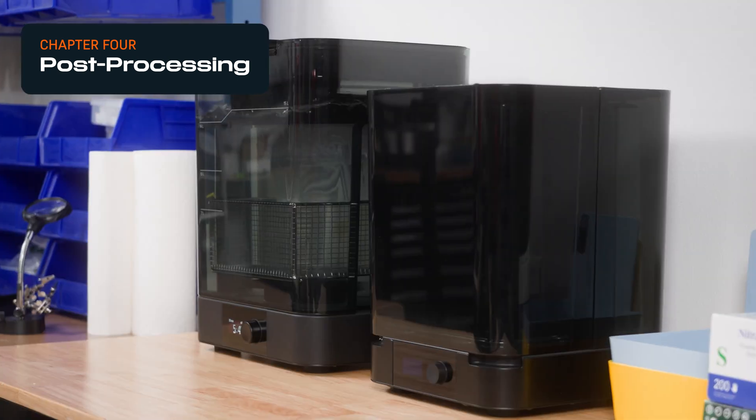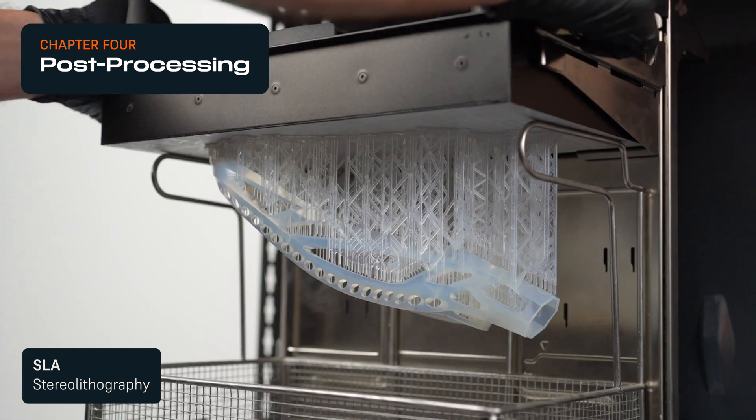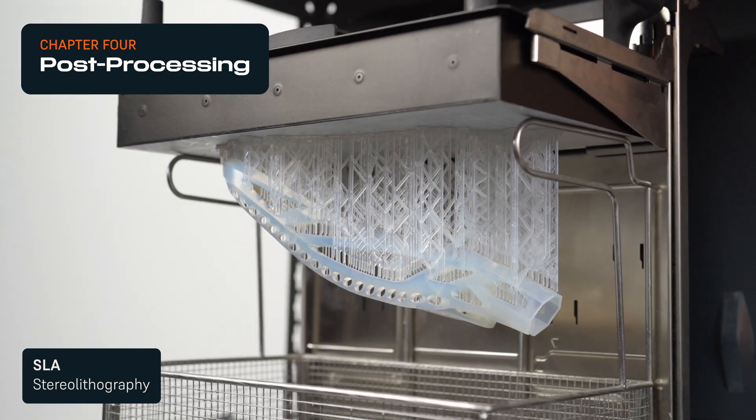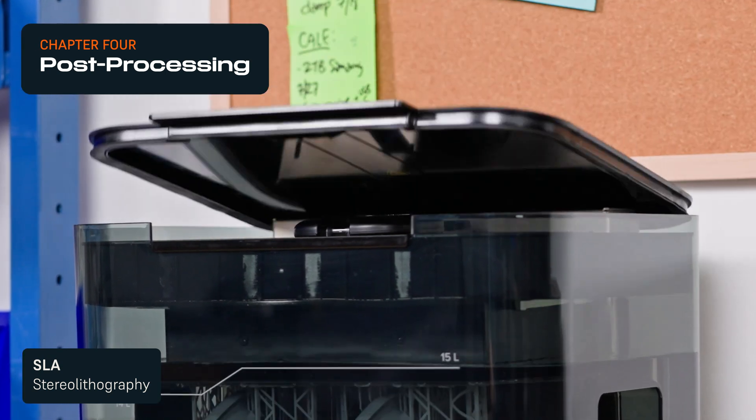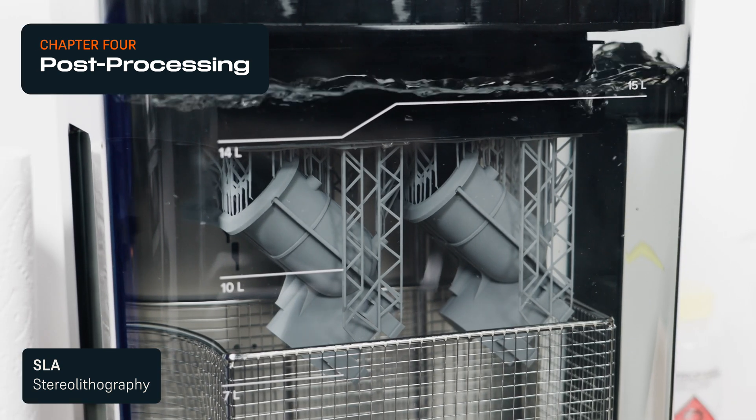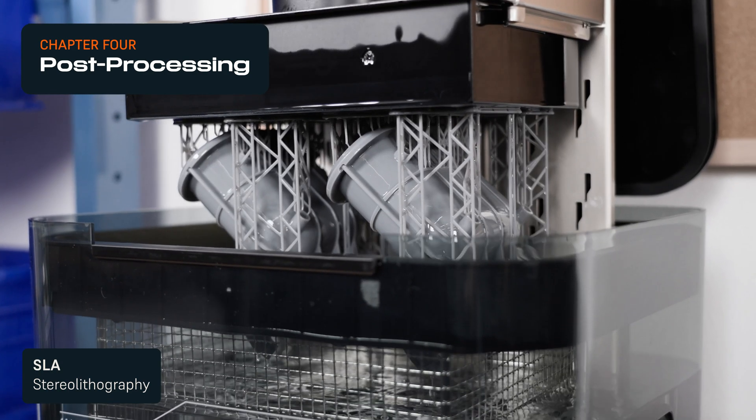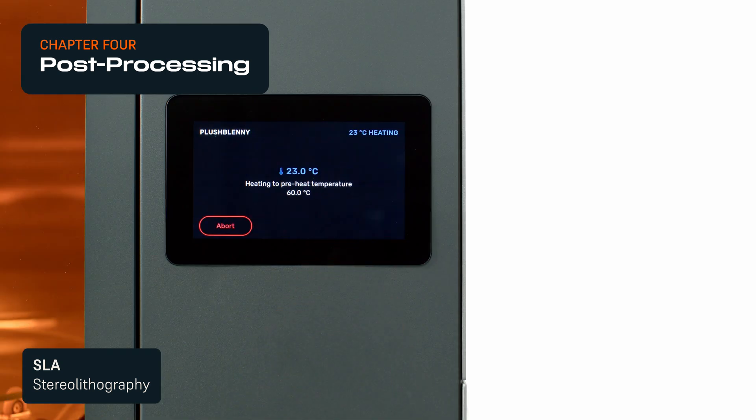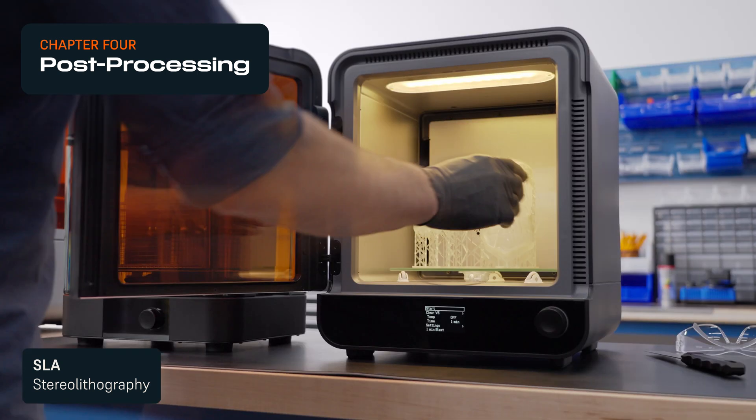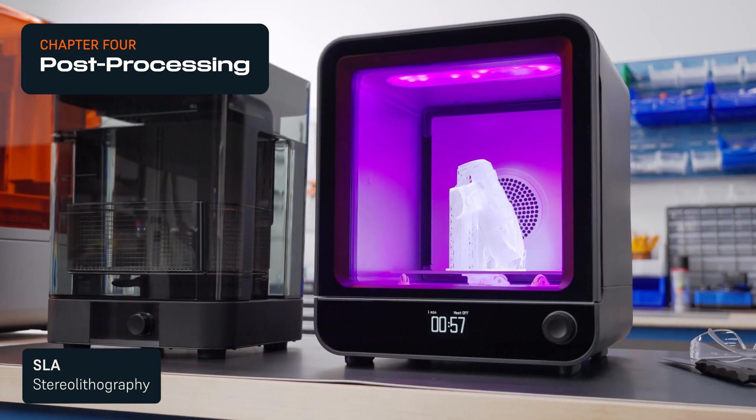For SLA 3D printers, the foundational step of the post-processing workflow is to remove excess resin from the surface of the parts through an alcohol or ether wash. This washing step can be done manually or by using an automated washing solution that agitates the liquid for a pre-set amount of time. After cleaning, some SLA parts require post-curing to help them reach optimal material properties, which can also be automated using advanced post-curing solutions.